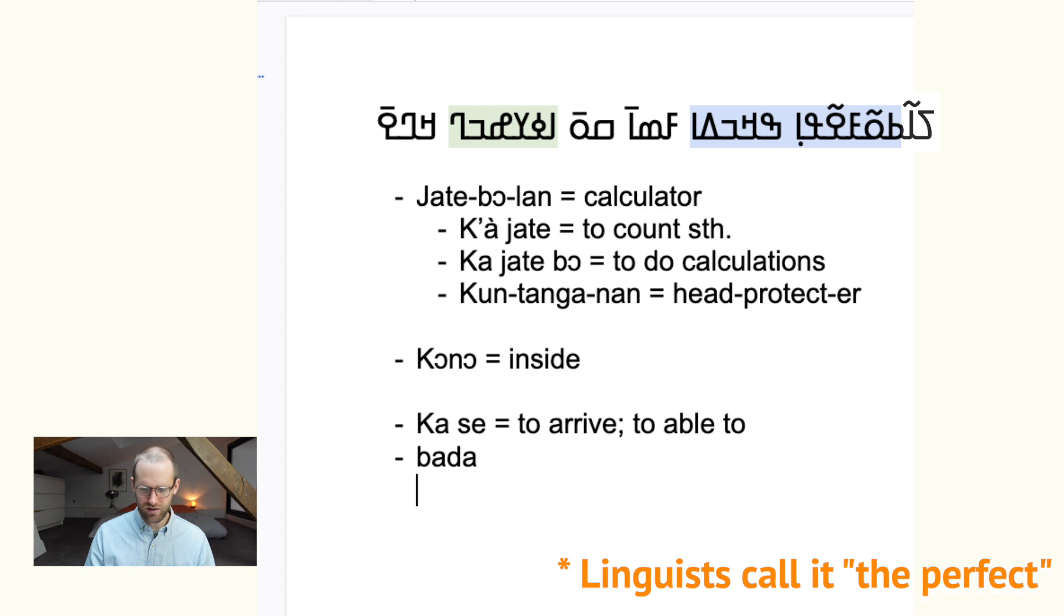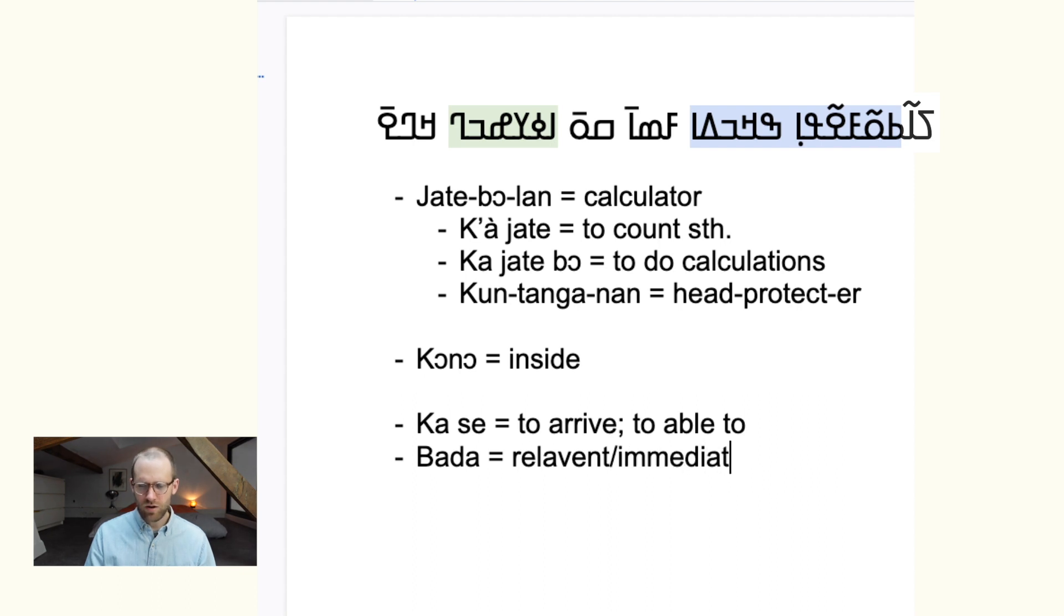So for instance, if we say, I'm going to put here, let's just put, relevant or immediate. Whoop, how do you write that, relevant, relevant or immediate past marker. So it's actually an auxiliary or a predicate marker.